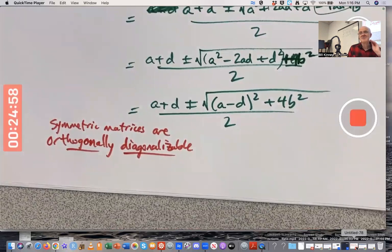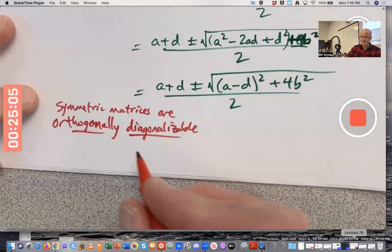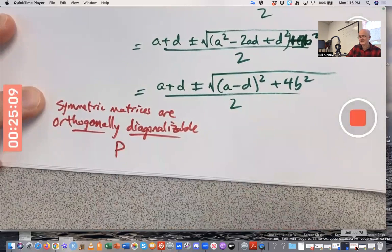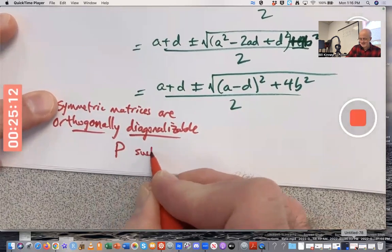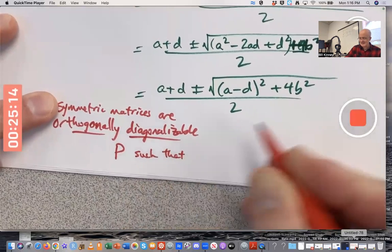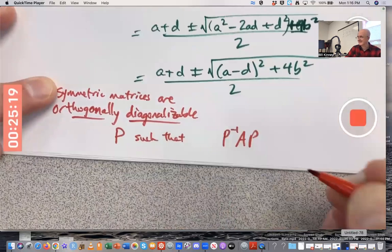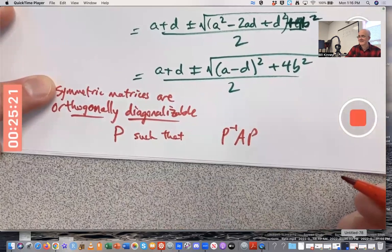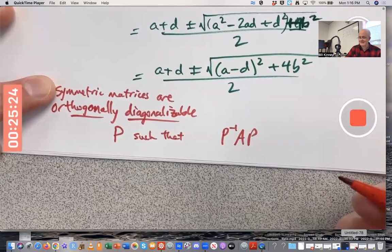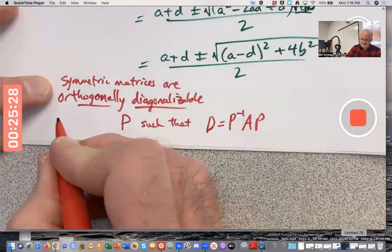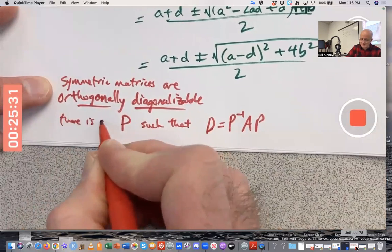What does that mean? Well, you should remember what diagonalizable means, right? There's a matrix P, invertible, such that P inverse A P is what? A diagonal matrix, call it D. That's what diagonalizable means.